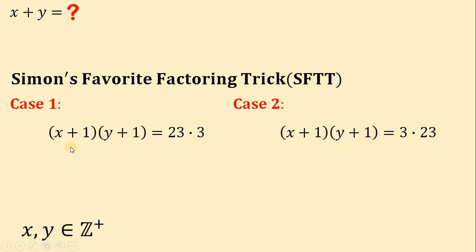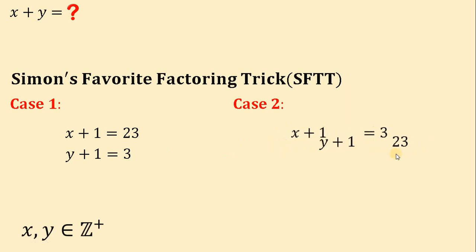On case 1, we can say that x plus 1 equals 23 and y plus 1 equals 3. On the second case, we can say that x plus 1 equals 3 and y plus 1 equals 23. Now let's solve for the value of x and y.